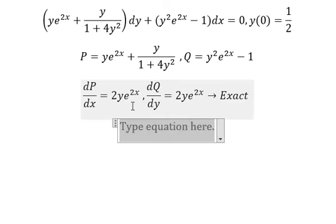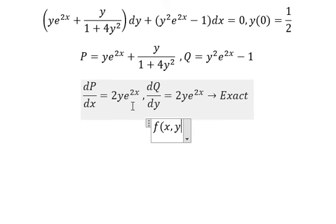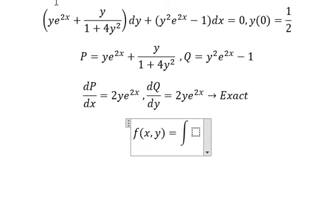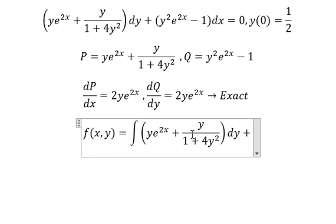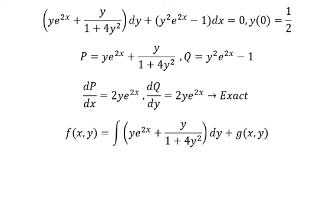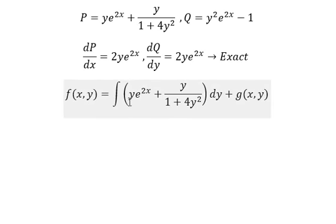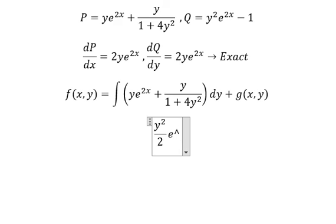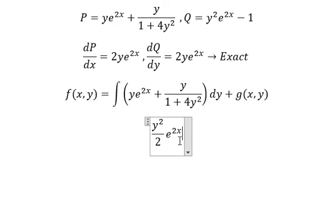We need to set up the function F(x, y) equal to the integral of P, plus g(x). The integral of the y term gives us y squared over 2 times e to the power of 2x, and the integral of this term gives 1 over 8...